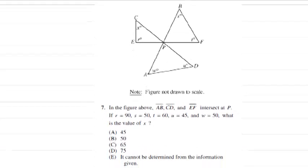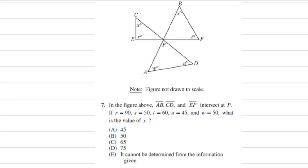Here's a problem from College Board's 2012 practice test. In this figure, we've got all of those segments intersecting at P. R is equal to 90, S is 50, T is 60, U is 45, W is 50. Our goal is to find out what X is.